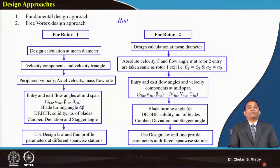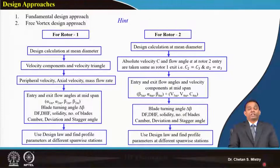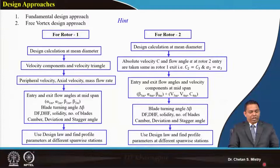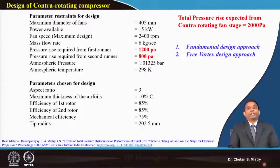For rotor one design we need certain velocity components to be known. Recalling our basic guideline for the design of an axial flow compressor, if the mass flow rate, flow coefficient, or diameters are known, we can move with calculating initial parameters. For this design, mass flow rate is known, tip diameter is known, and rotational speed for both rotors is 2400 rpm — which makes our calculations a little easier.